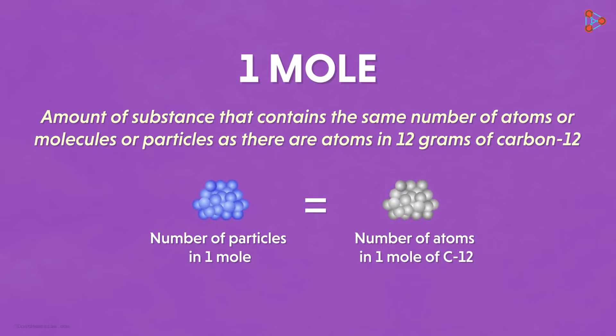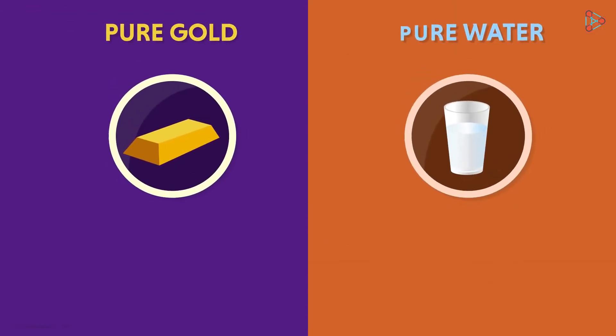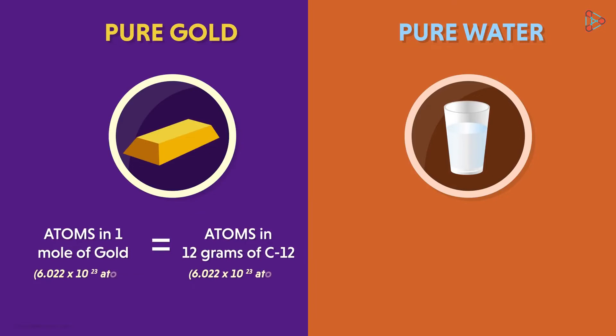How about taking the same example of pure gold and pure water? When we say one mole of pure gold, then according to our definition, it will have the same number of atoms as the number of atoms in 12 grams of carbon-12. That means one mole of gold will have 6.022 times 10 raised to 23 atoms of gold.